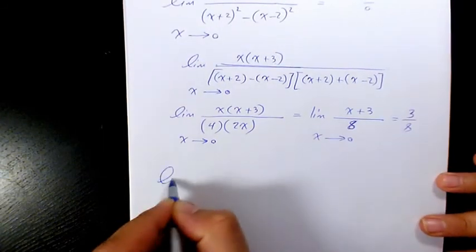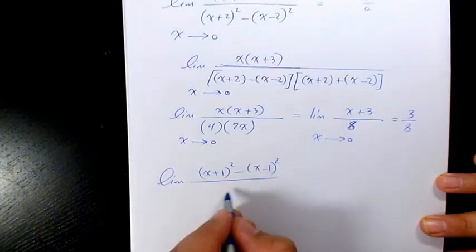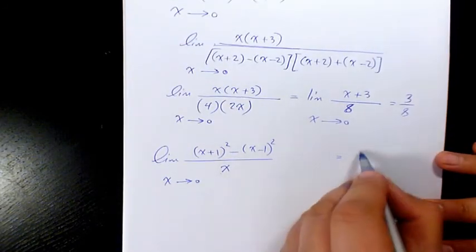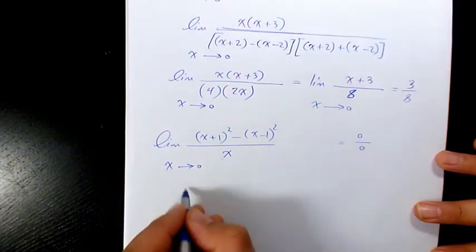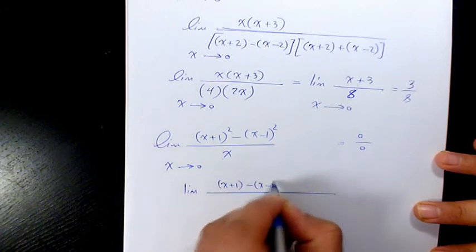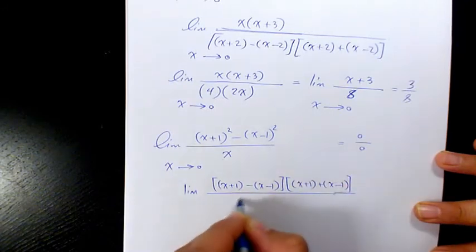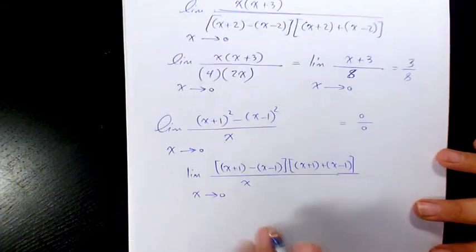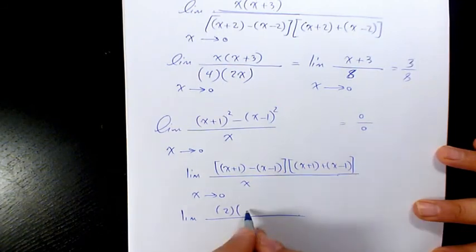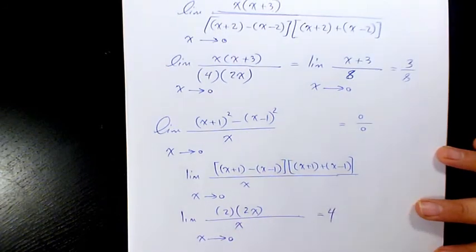Next one: the limit of ((x plus 1) squared minus (x minus 1) squared) over x when x is approaching 0. Substituting gives 0 over 0. We expand using difference of squares: (x plus 1 minus (x minus 1))(x plus 1 plus (x minus 1)) over x, which is 2 times 2x over x. Canceling x gives 4.